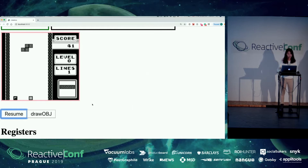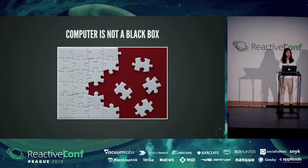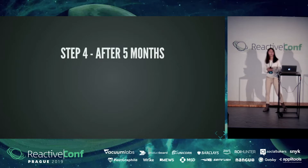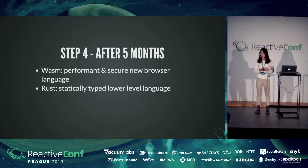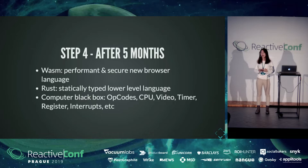So, computer - it is not a black box. It is just made up from many, many small things that are following their own super simple rules. All right. Now, we are finally in our step four. It has been about five months since I started this Game Boy emulator project. I have learned this performant, secure web, new browser language, WebAssembly. I have read some statically typed lower-level language code in Rust. And I have opened a lot of computer black boxes, like opcodes, which we talked about, and a bunch of other stuff we didn't talk about, like CPU, video, timer. They are all very interesting topics.